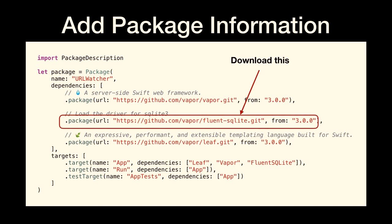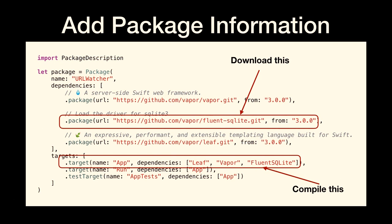Here I want Fluent SQLite version 3 or above. At the bottom, we make an association saying when we compile the app target, we want to include Leaf, Vapor, and Fluent SQLite. In Xcode, we would never actually compile the app target directly — there's a 'run' target that has a dependency on app. When we say 'do run', it says run needs app, and app needs Leaf, Vapor, and Fluent. It makes sure everything's up to date, downloads anything that isn't, compiles it all up, links it together, and runs our app.